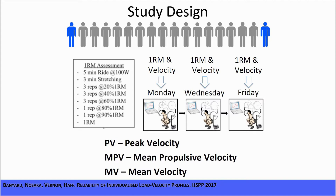The lifting intensities we tested were at 20%, 40%, 60%, 80%, 90%, and 100% 1RM. The three concentric velocities that we measured were peak velocity, mean propulsive velocity, and mean velocity, which I'll refer to as PV, MPV, and MV from now on.